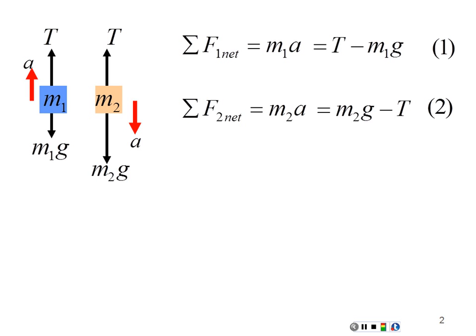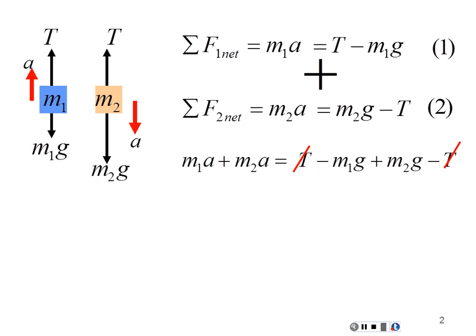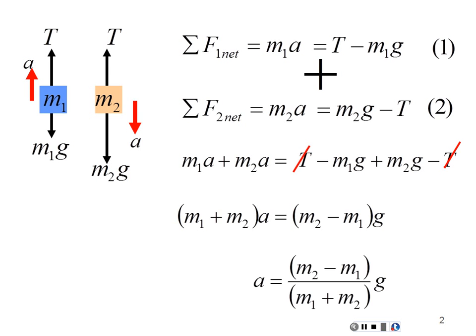Both these equations have the same value of acceleration, so I have two equations with two unknowns. I'm going to add them together: M1A plus M2A equals tension minus M1G plus M2G minus tension. The tension cancels out. Factoring out A on the left gives M1 plus M2 times A, and factoring out G on the right gives M2 minus M1 times G. So my acceleration equals (M2 minus M1) times G over (M1 plus M2) — the general formula for two masses on a pulley.